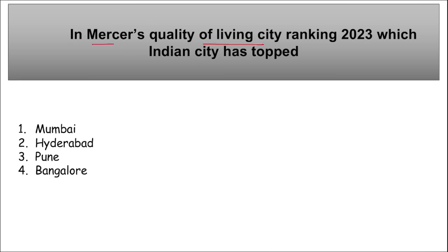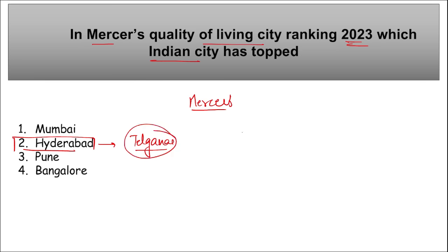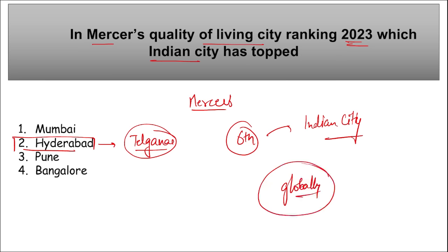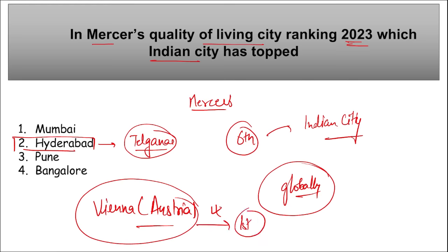In Mercer's Quality of Living City Ranking 2023, Hyderabad — capital of Telangana — has topped the Indian ranking for the 6th time, emerging as the best Indian city. Globally, Vienna, Austria secured the first position as the city offering the highest quality of life in the world.